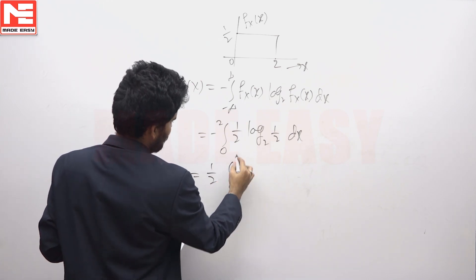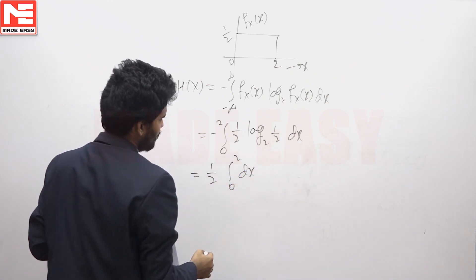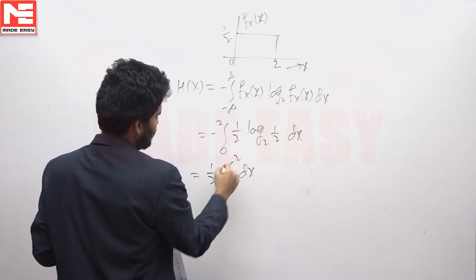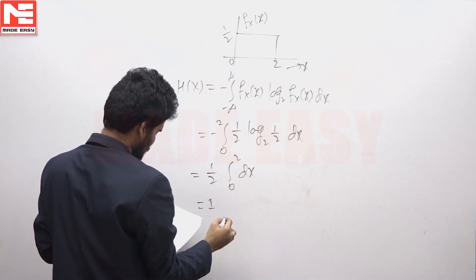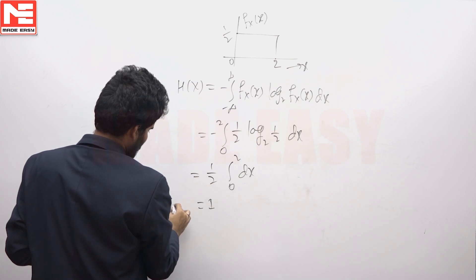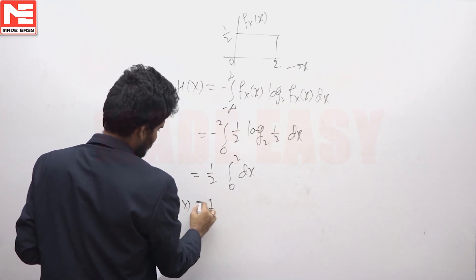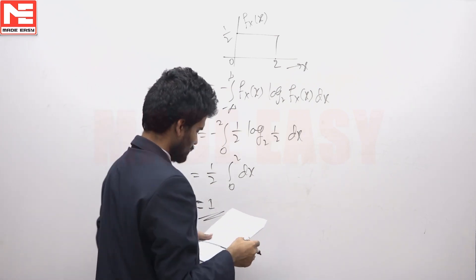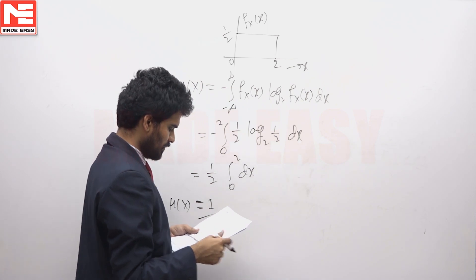The integration from 0 to 2 of (1/2) dx is simply 1, since the 2's cancel. So h(x) equals 1. The answer is option B.